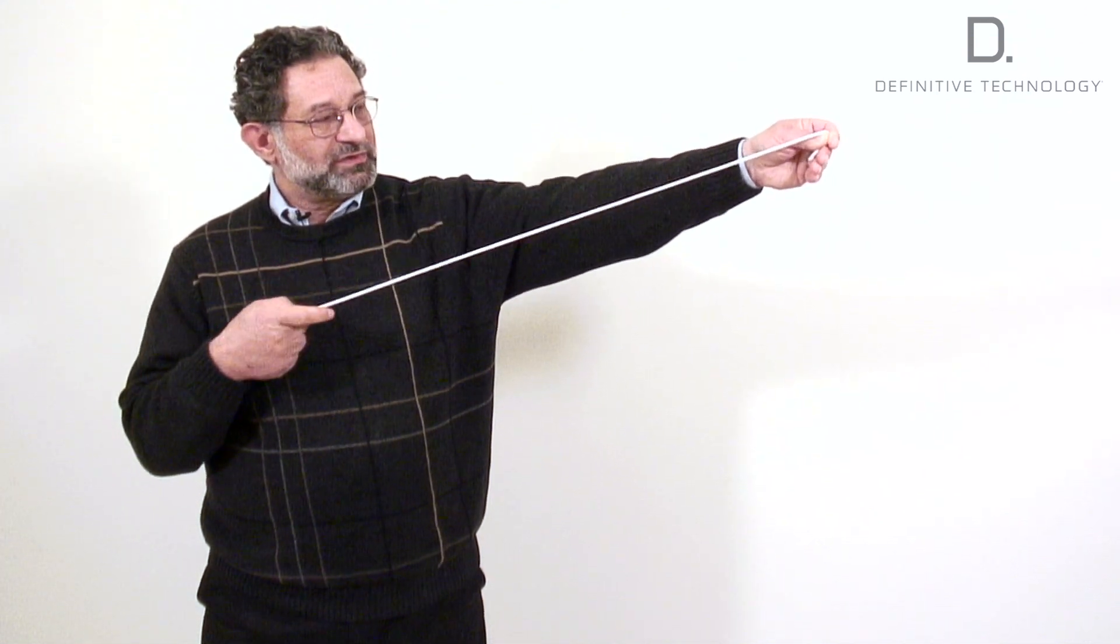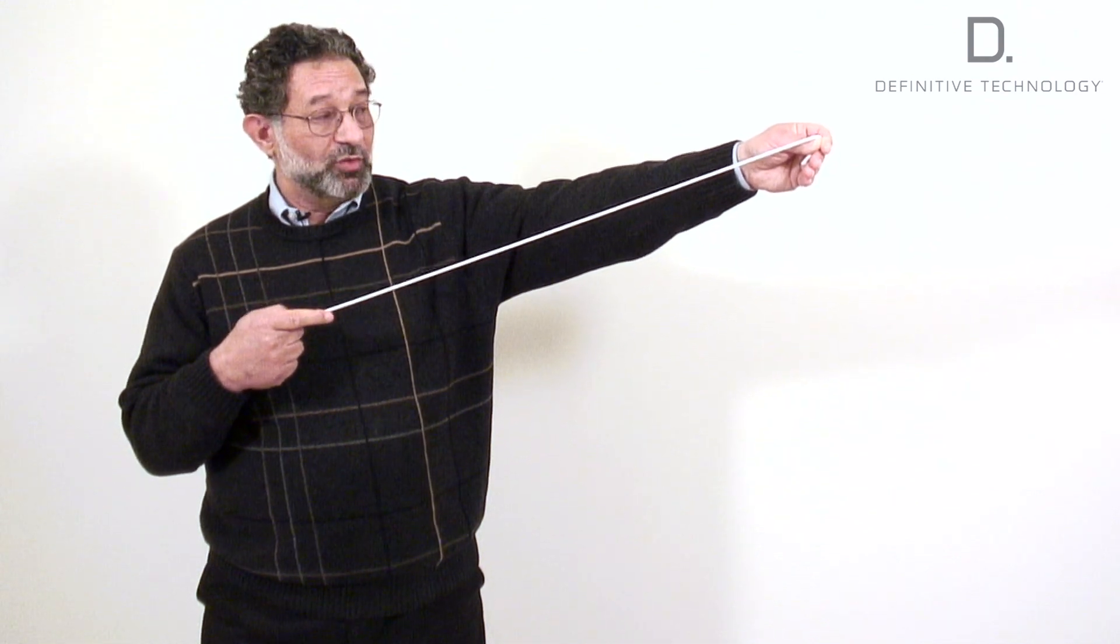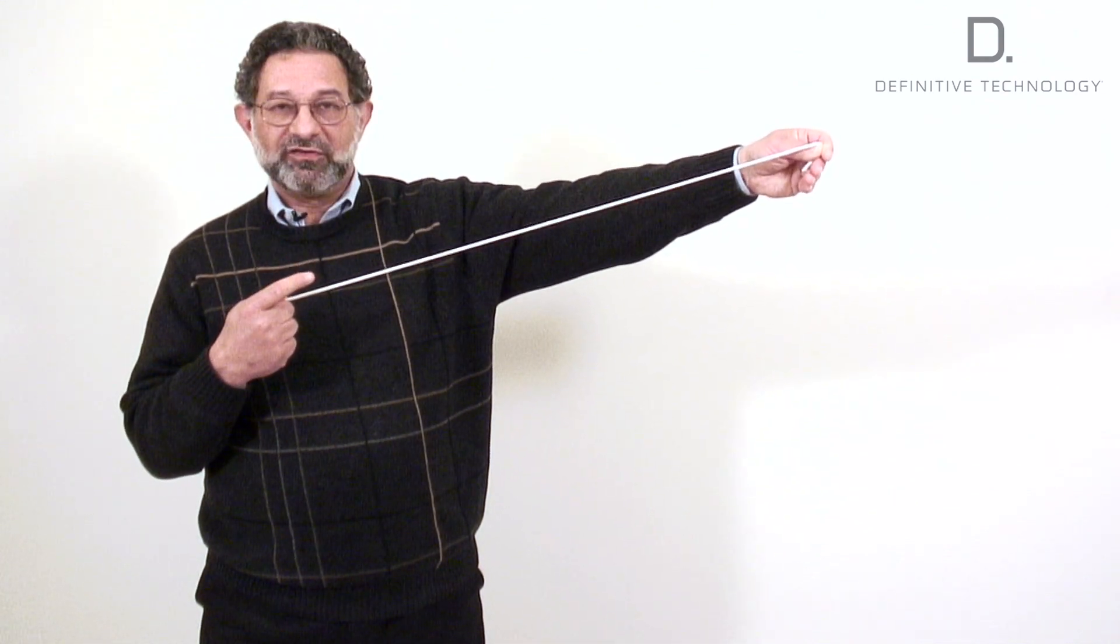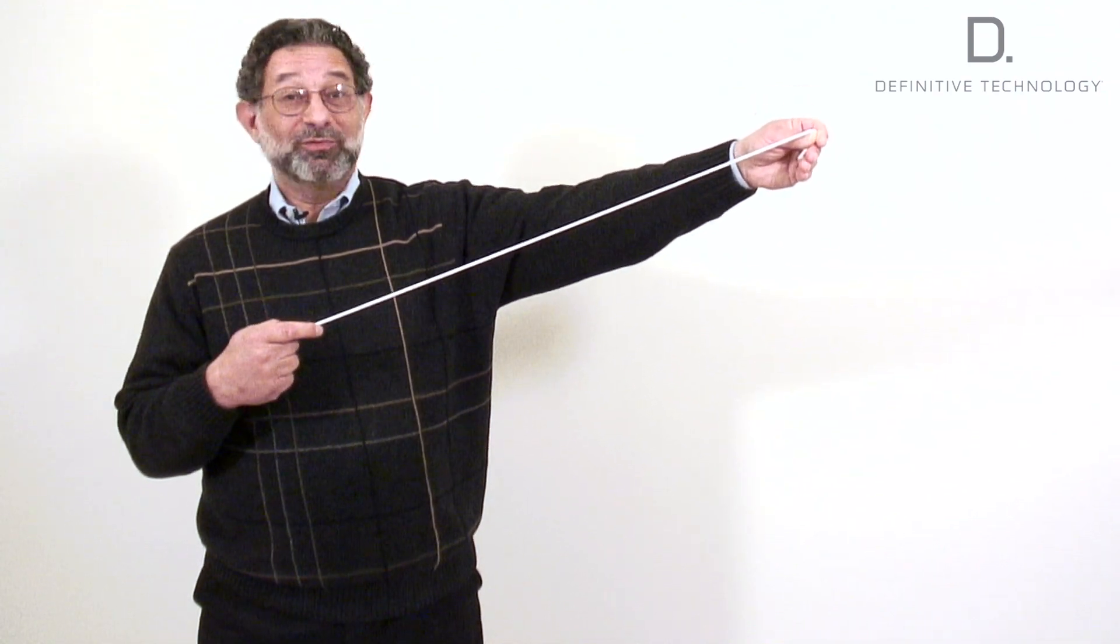If you look closely, what's really going on here is that the resonance travels down the cone, or the rope in this case, bounces off my hand, and travels back through the cone again, making the problem even worse.